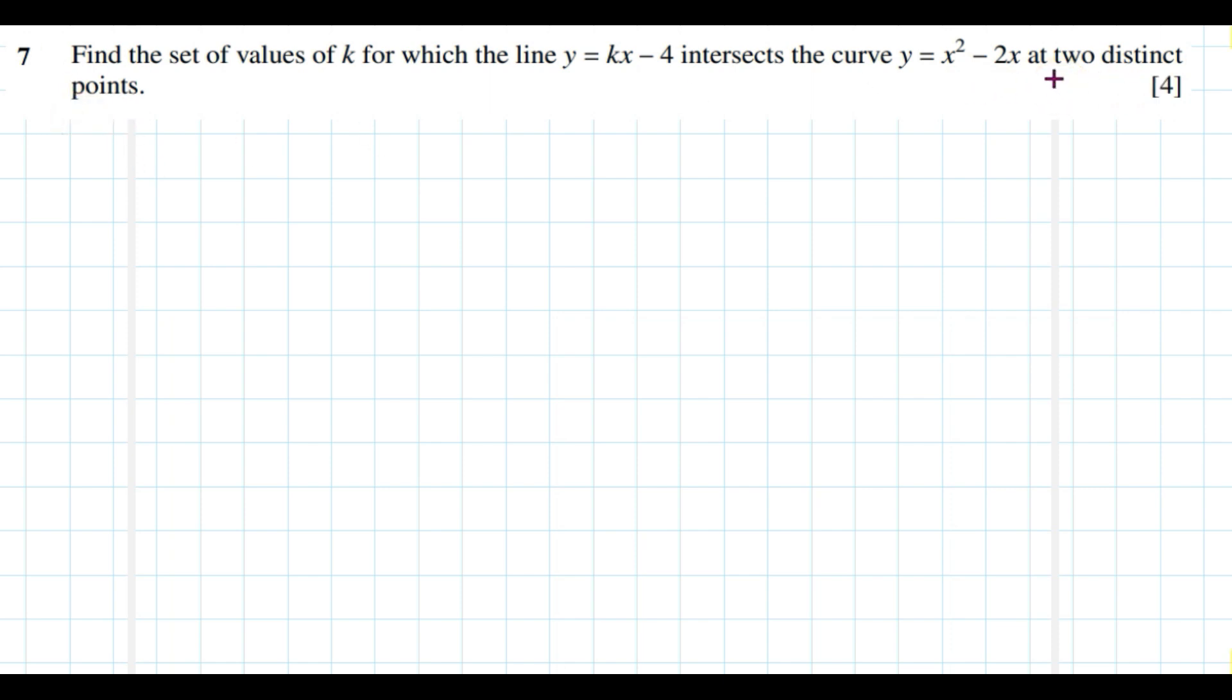So the condition that applies here is there are two distinct points of intersection between the line and the curve. Therefore, similar to the previous question, we need to apply the discriminant term such that b squared minus 4ac is greater than zero. It should be positive in order to get this condition.